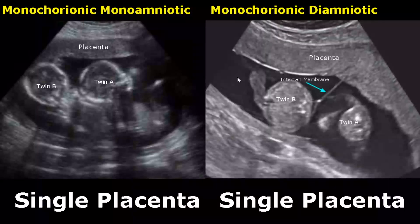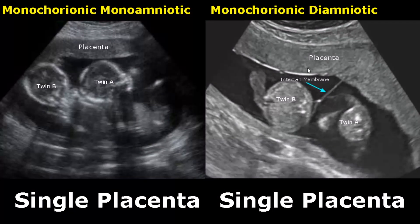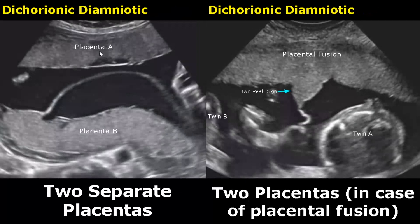Now we move on to the number of placentas. In monochorionic-monoamniotic twins, we see only one placenta supplying both twins. Dichorionic-diamniotic twins usually have two separate placentas, but in some cases there is fusion of the placentas if they are close to each other, and they will appear as a single placenta.